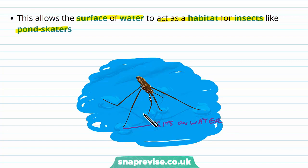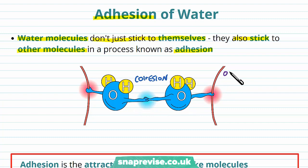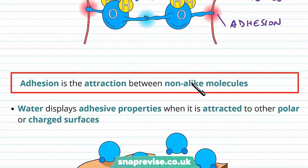As well as cohesion of water, we have another force at work known as adhesion. The water molecules stick together with cohesion, but they don't only stick to themselves — they also stick to other molecules in a process called adhesion. Cohesion lies between water molecules, sticking them together as a group; adhesion is the connection to other molecules. The difference is that adhesion is the attraction between non-alike molecules, whereas cohesion is about alike molecules.